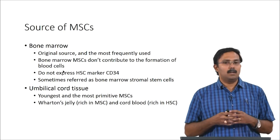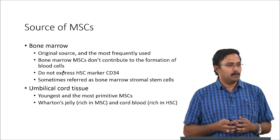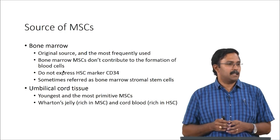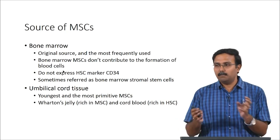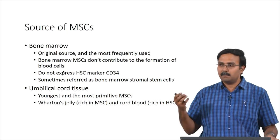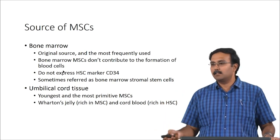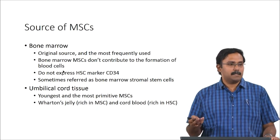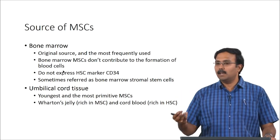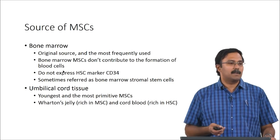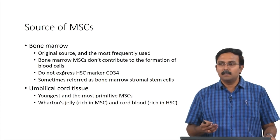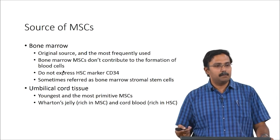The original source for mesenchymal stem cells is bone marrow — the same location as hematopoietic stem cells, but these are different. HSCs and MSCs are different although they both reside in the bone marrow. Bone marrow mesenchymal stem cells do not contribute to the formation of blood cells, whereas hematopoietic stem cells are fully committed towards the formation of blood cells. Because they are not involved in blood cell formation, they do not express the HSC marker CD34 — this is used to identify whether an isolated cell is a mesenchymal stem cell or a hematopoietic stem cell. These are also referred to as bone marrow stromal stem cells.